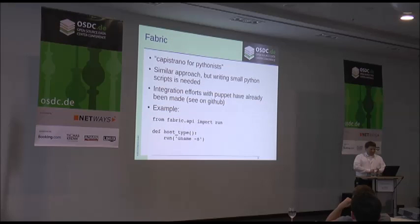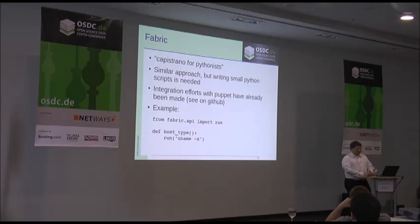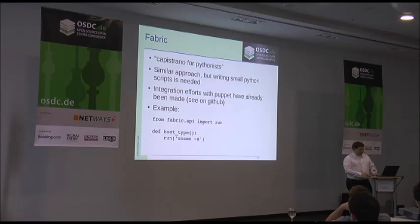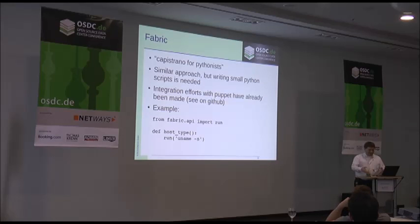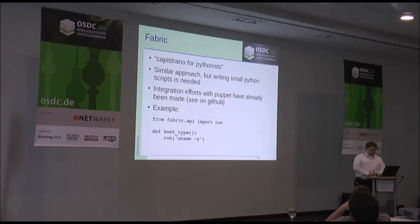Some other tools that came to mind: Fabric is a kind of Capistrano for Python users. If you're in the Python world, Fabric should be something you know. It's a similar approach — taking care of deployments and copying things over SSH. You can also find several integration efforts with Puppet, where connections to Puppet runs are made in the Fabric libraries. If you want to incorporate it in your existing Python scripts, you just have to import the Fabric API as laid down on this slide and then do the manual run, similar to Capistrano.